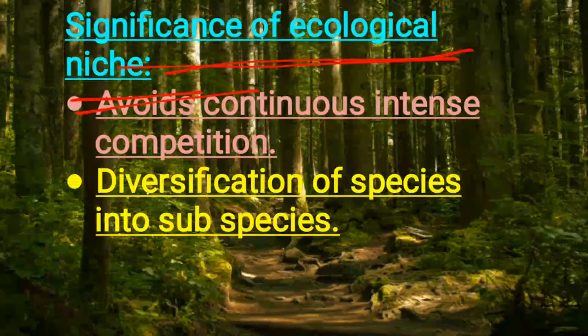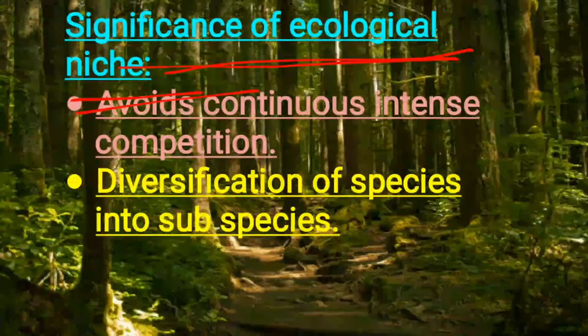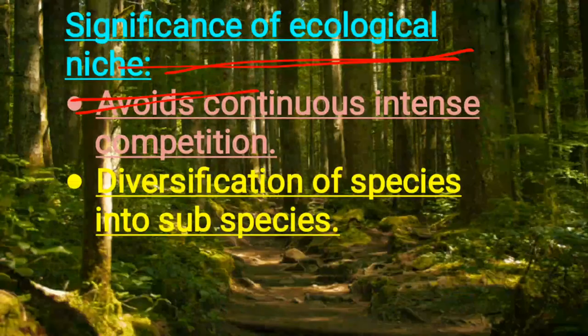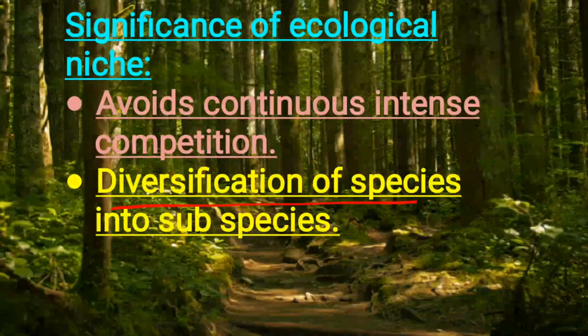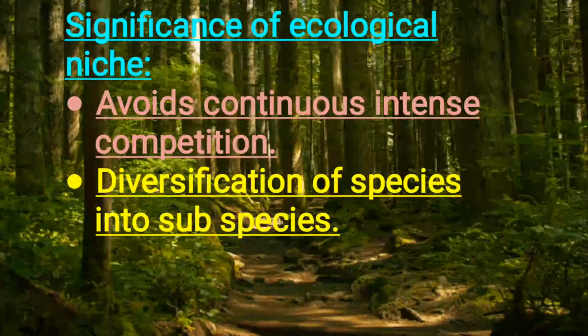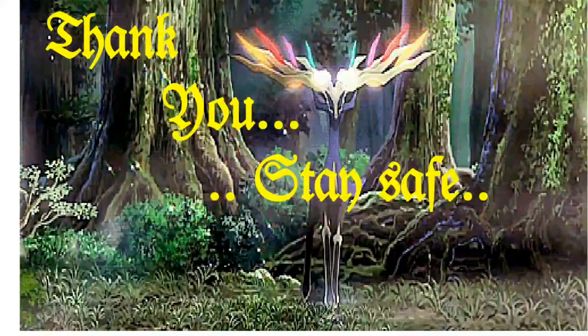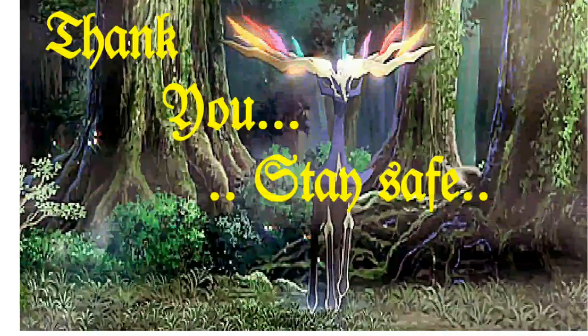One species cannot survive at the expense of the other. The second significance is that the ecological niche also helps in the diversification of species into subspecies — within the same habitat with the same physical features, two species may be divided into subspecies based on different ecological niches. This is a very important concept in ecological terms. I hope you have completely understood ecological niche. Thank you very much — stay safe, and next time we will cover the various levels of biological organization.